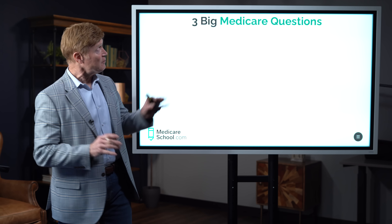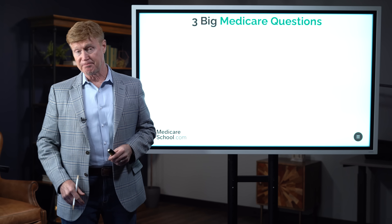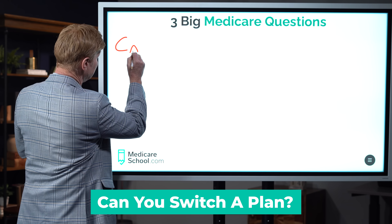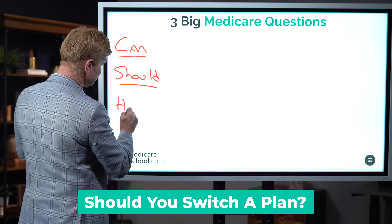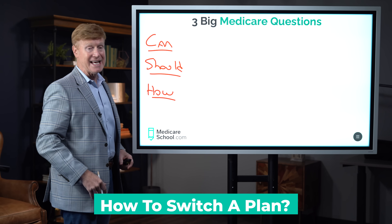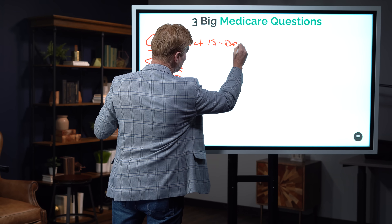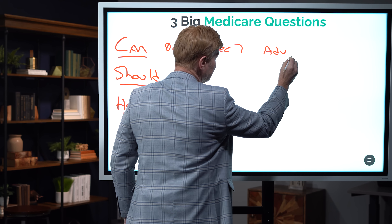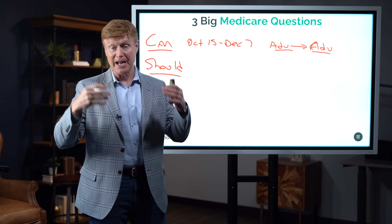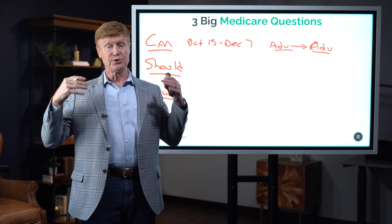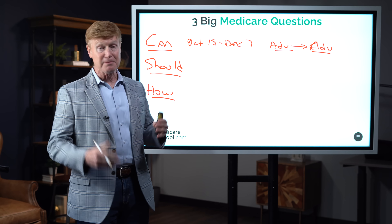The three big Medicare questions during the Annual Election Period are: Can you switch? Should you switch? And how to switch? During October 15th through December 7th, if you're on an Advantage plan, you can absolutely switch to a different Advantage plan in your market — no health questions asked — as long as you're enrolled in A and B. You can select any plan available in your region, typically determined by zip code.